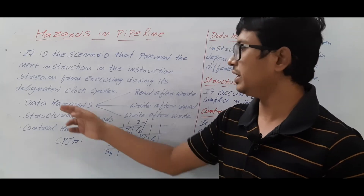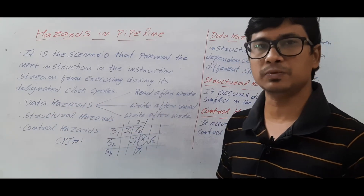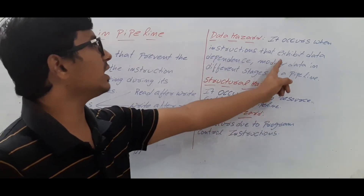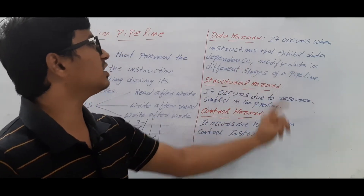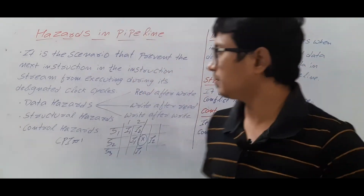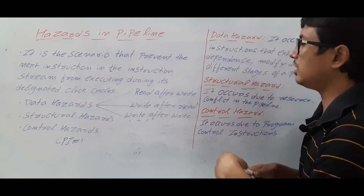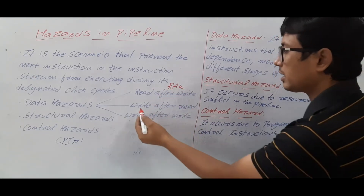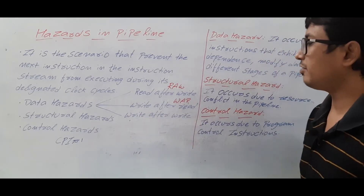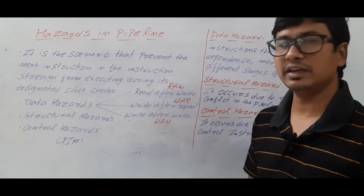There are three types of hazards: data hazard, structural hazard, and control hazard. Data hazards are further classified into three types: Read After Write (RAW), Write After Read (WAR), and Write After Write (WAW).